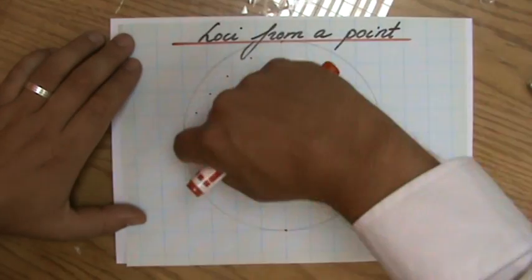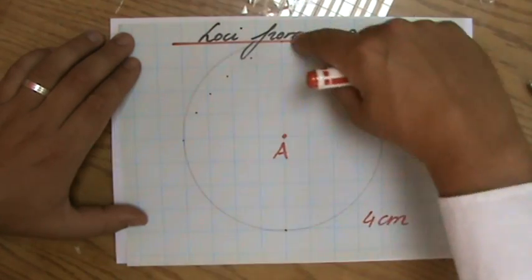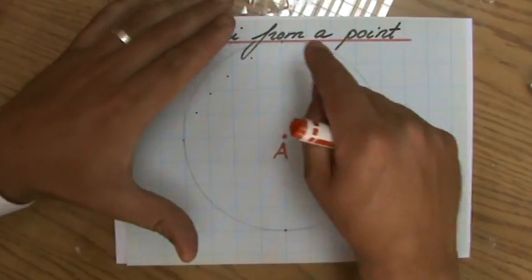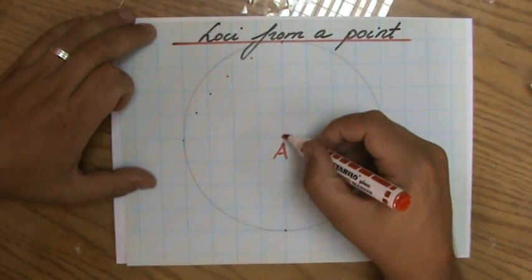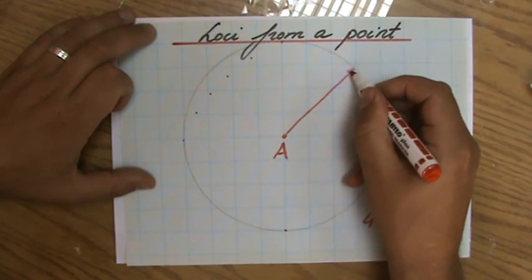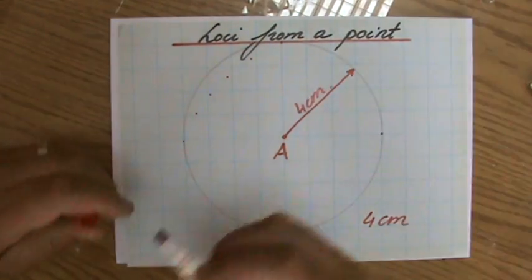So all the points on the circumference are four centimeters away from A. The loci from a point you'll find using your compass with a radius, in this case, of four centimeters.